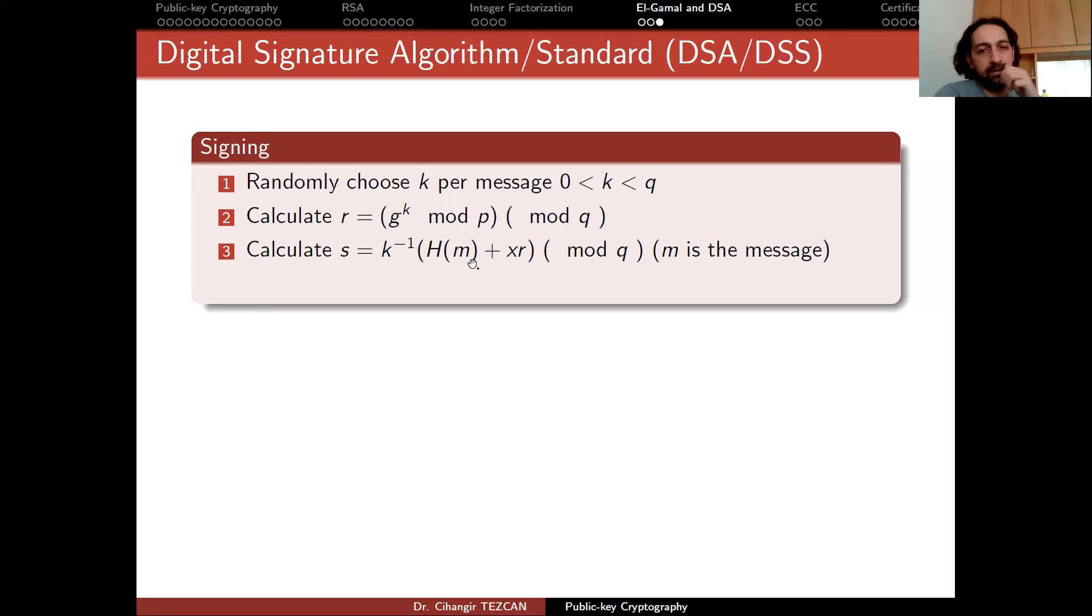Then you calculate the hash of your message. As we discussed a lot in the hash functions, when you're signing a message, a document or a file, you don't sign the whole file. For instance, GPU drivers are now more than 500 megabytes. Signing such a file will take a lot of time. So instead of putting M here, we take the hash of it. If you are using SHA-256, this would be just a 256-bit value.